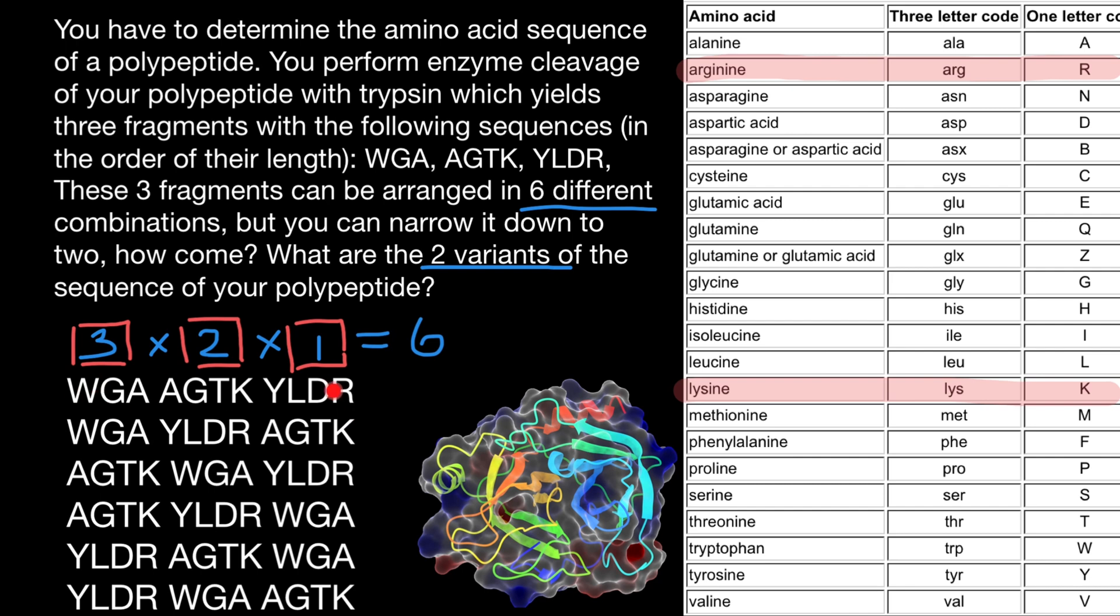Just looking at this first variant, we can say that this sequence has been cut here at the C-terminus of the amino acid lysine—K specifies lysine. And it also has been cut at this place—R specifies arginine at the C-terminus.